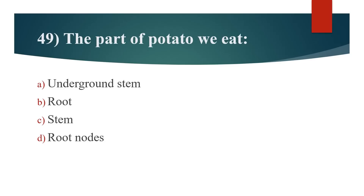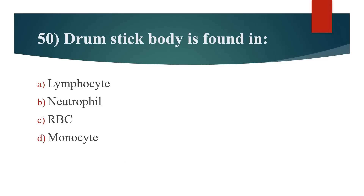49th question: The part of potato we eat is? Option A: Underground stem. Option B: Root. Option C: Stem. Option D: Root nodes. Answer is Option A: Underground stem.